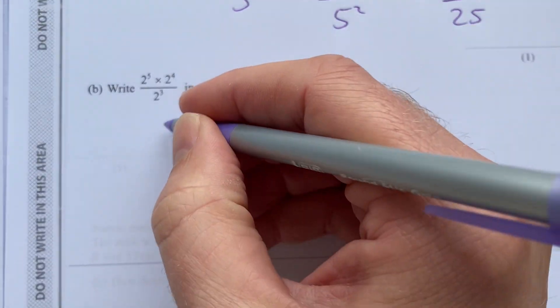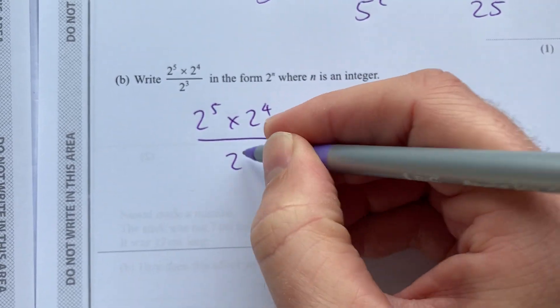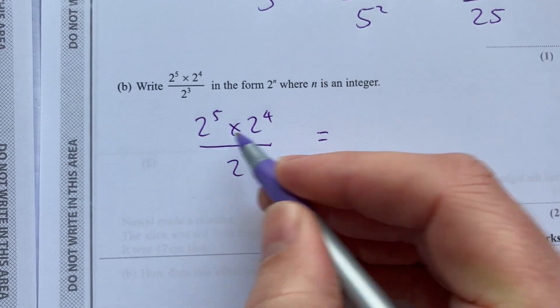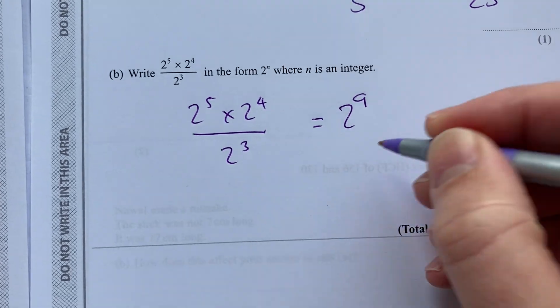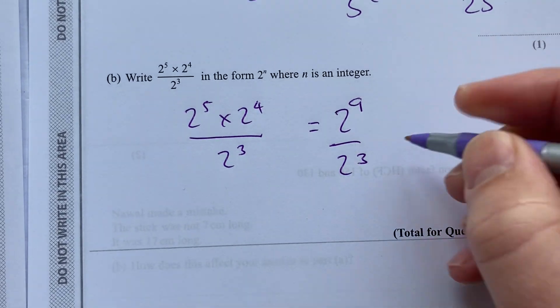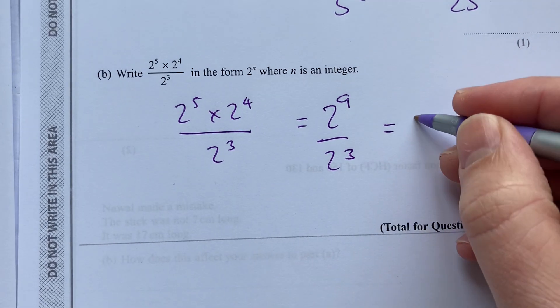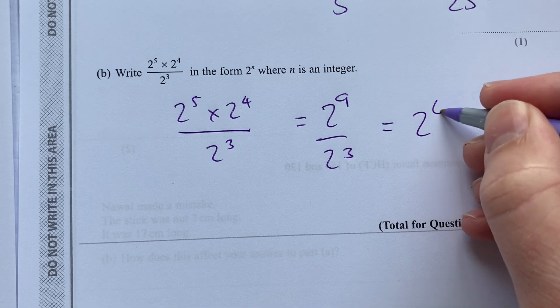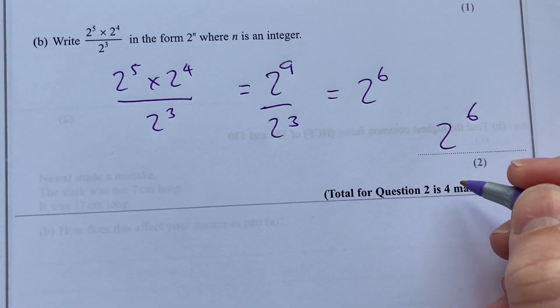Some more index laws here. 2 to the 5 times 2 to the 4 over 2 cubed. When you multiply the bases, add the powers. 2 to the 9 over 2 to the 3. When you divide the bases, you subtract the powers. 2 to the 9 minus 3 is 6. So 2 to the 6 there. And that's worth 4 marks for index laws.